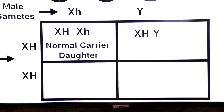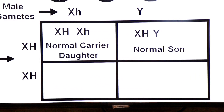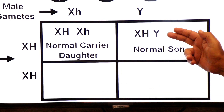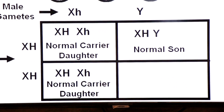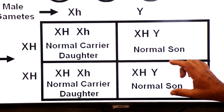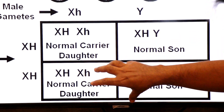Second box: from top Y and from left X capital H — that boy will be normal because capital H is the normal allele, and Y carries no allele for hemophilia; it is X-linked. Third box: from left X capital H and from top X small h — again, it will be a normal carrier daughter. Last box: from top Y and from left X capital H — that will be a normal son.